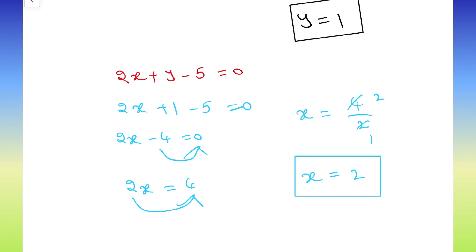Now, I will give you one question. You need to solve that one and comment the answer in the comment box. Solve 3x plus 2y equals to 5 and 2x minus 3y equals to 7 by elimination method.